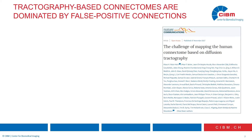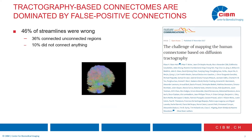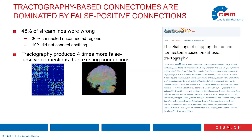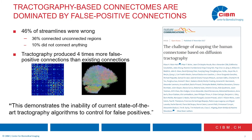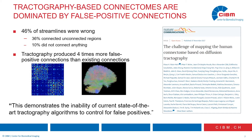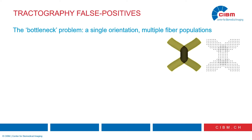However, over the past few years there were reports of poor specificity of diffusion tractography. In particular, one paper from the diffusion community reported that on a realistic phantom, 46% of streamlines were wrong — among them 36% were connecting unconnected regions, and 10% did not connect anything. Overall, tractography produced four times more false positive connections than true positive connections. To quote the authors, this demonstrates the inability of current state-of-the-art tractography algorithms to control for false positives.